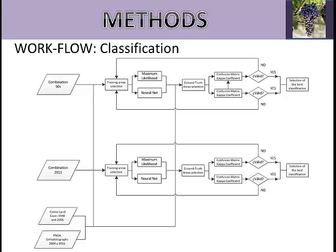The next step is the classification accuracy assessment. To execute the accuracy assessment, ground truth areas were selected from orthophotographs, with over 50 pixels per ground truth area. These assessments are based on comparing the ground truth areas with the same pixels of the classified images, obtaining a confusion matrix. The Kappa statistic, overall accuracy, and producers' and users' accuracy were calculated from the confusion matrix, and these statistics were used to select the suitable classification for each year.